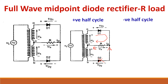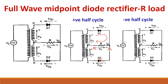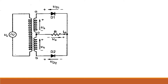During the negative half cycle, the polarities reverse: this portion becomes negative and the other becomes positive. So D1 will be reverse biased and D2 will be forward biased. Current flows in the direction such that through the load it again flows from A to B. So though D1 conducts during the positive half cycle and D2 conducts during the negative half cycle, the current through the load is always in the same direction, giving a unidirectional output current and voltage.